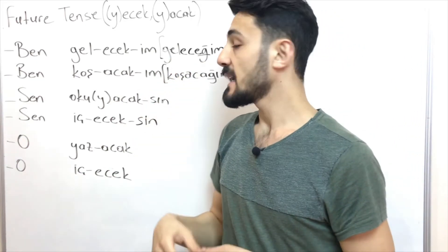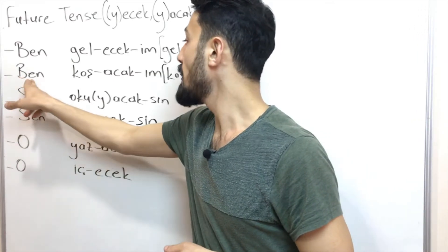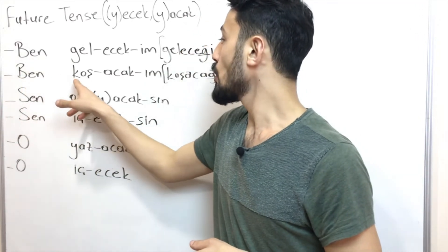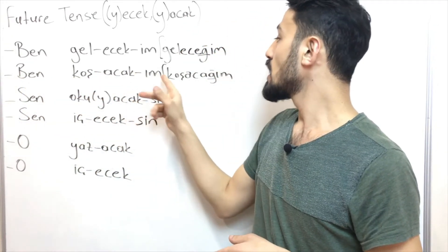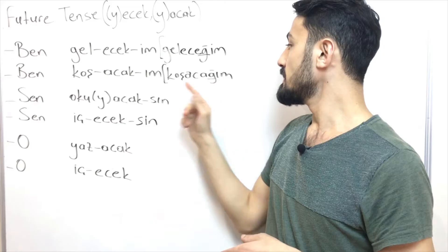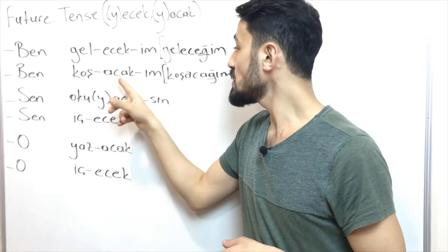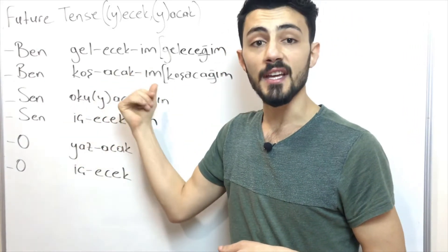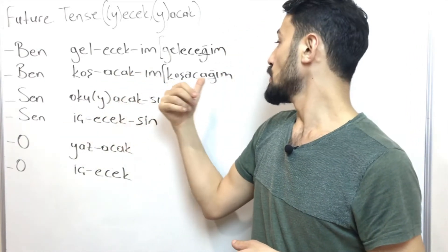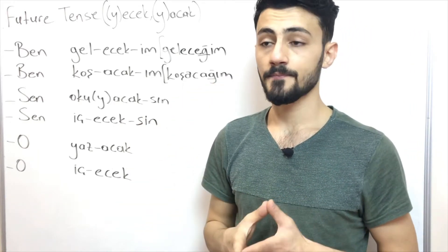Another example: ben koşacak-im → koşacağım. Again, the k sound stays between two vowels and it changes to a soft g. This is first person singular.